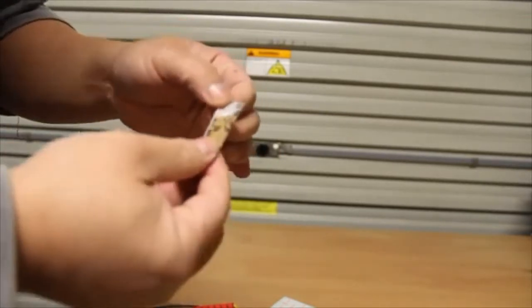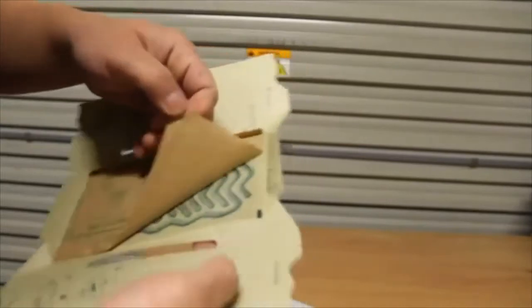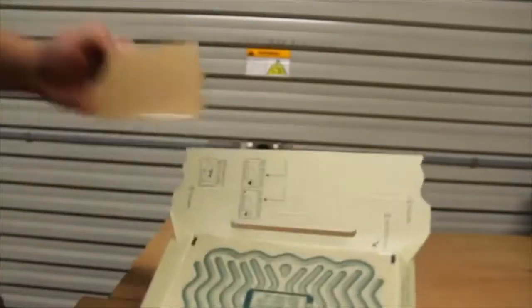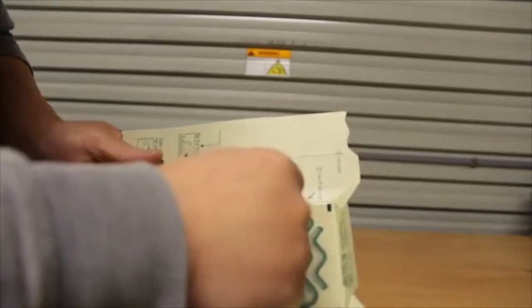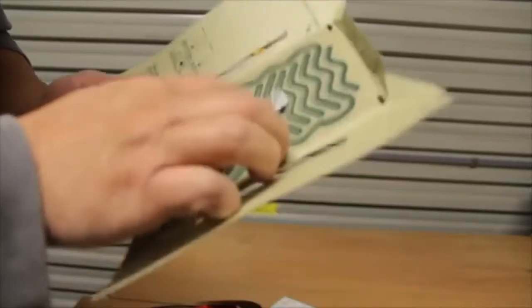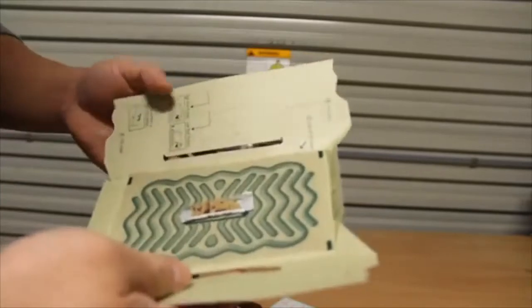You just place it on the trap. You open this part here, so all this part here is all just glue, and you put the bait in the middle there.